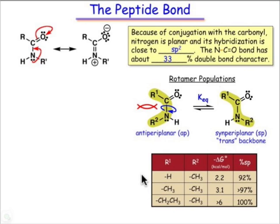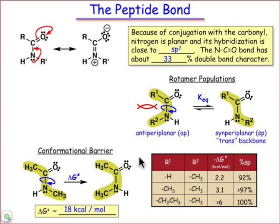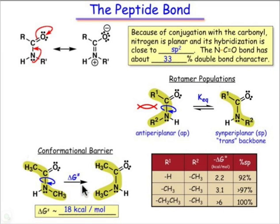That's the equilibrium situation, but there's also a dynamic situation. There is a barrier to rotation between the syn-periplanar and the anti-periplanar conformation, and that controls how fast one interconverts to the other. At 18 kilocalories per mole as an activation barrier, at room temperature each amide linkage is going to be able to surmount that barrier on the order of about one time per second.